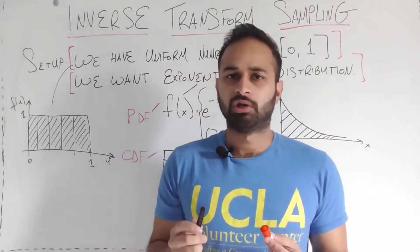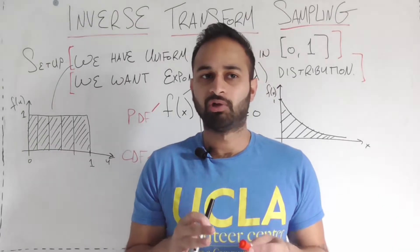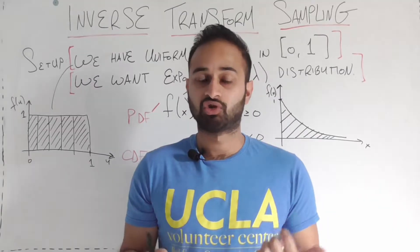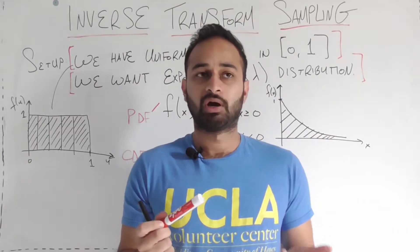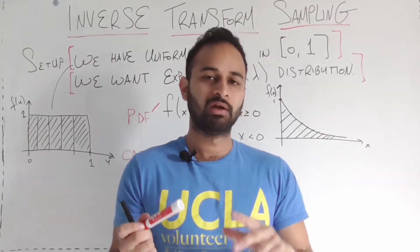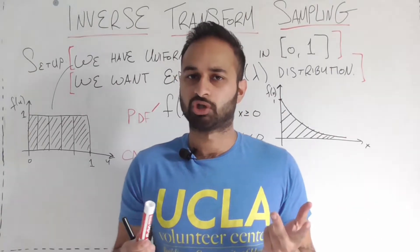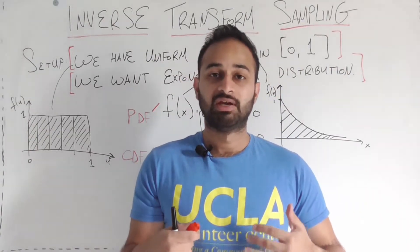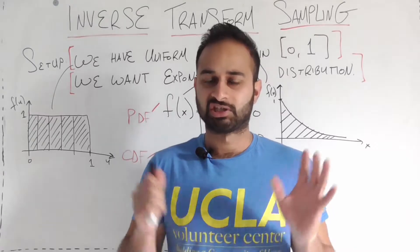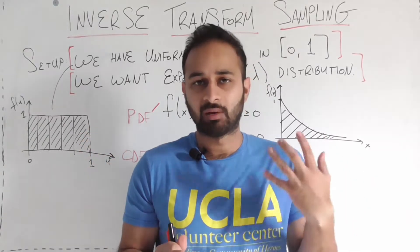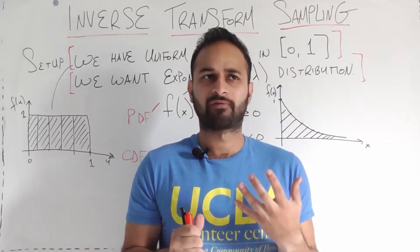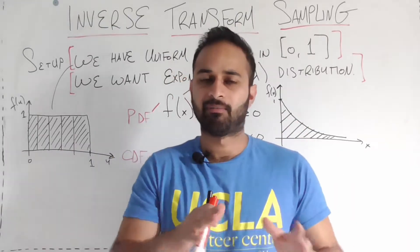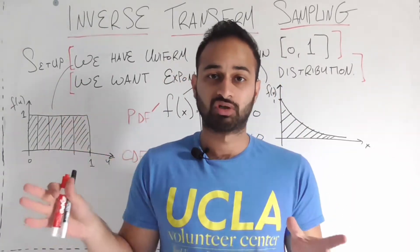Before we get into the math, let's think about why we might want to do this. In any computer program we can generate common distributions — the exponential, the normal, the uniform — but behind the scenes the computer is doing something to generate numbers from those distributions. This video goes into what the computer is doing behind the scenes, to give us a better grasp of how transformations work and how we can map one set of numbers onto a different distribution.